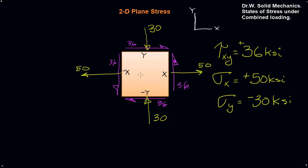We've got tension in the x-direction pulling it apart, some compression in the y-direction, and a shearing stress which is trying to elongate this thing — distorting it into a parallelogram.